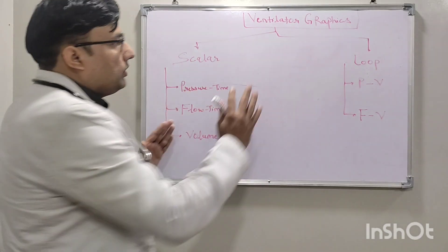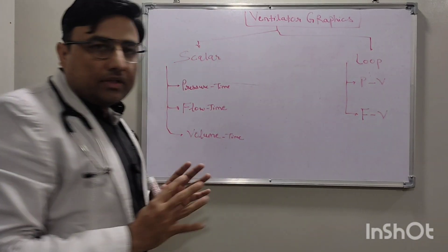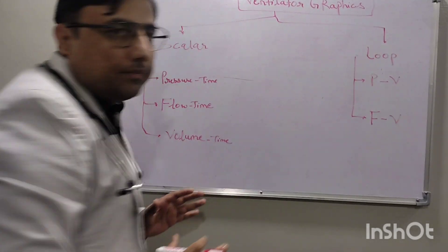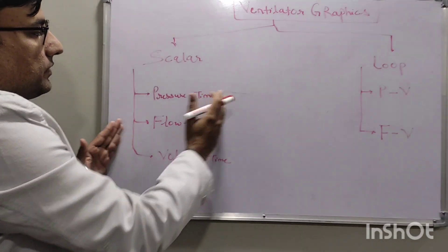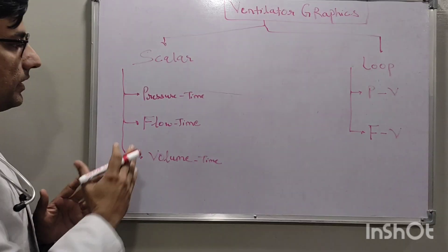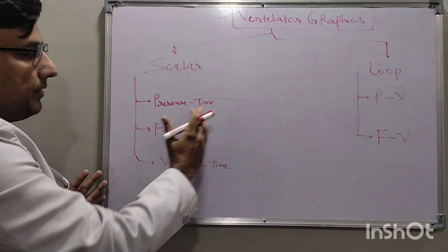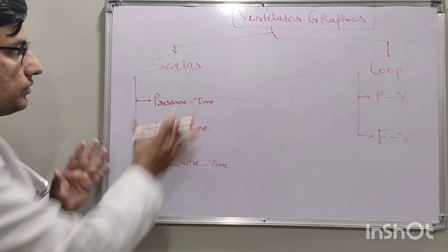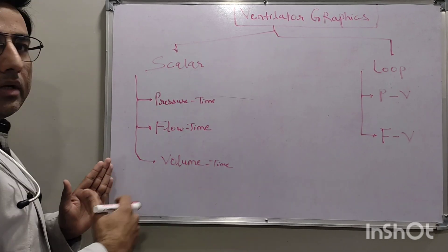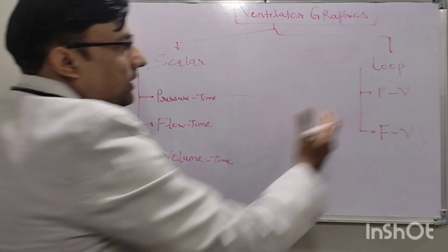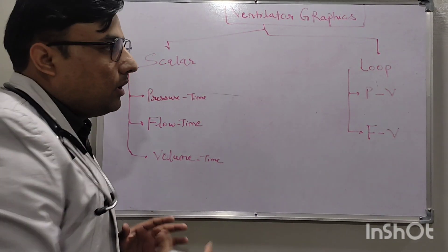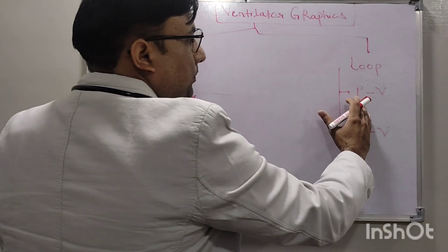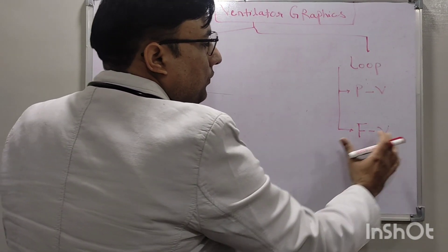Basically two types of ventilator graphics are there: first is scalar and second is loops. Scalar graphics we plot against time — pressure versus time, flow versus time, volume versus time. Loops we plot against each other, like pressure-volume loop or flow-volume loop.